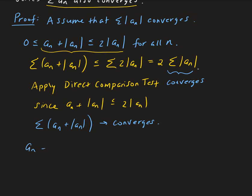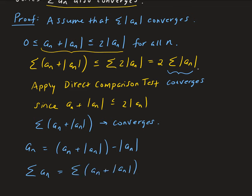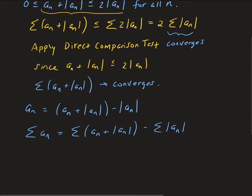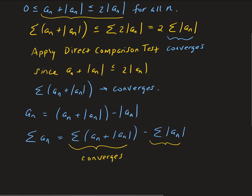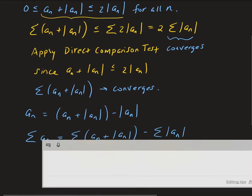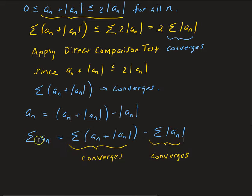We can rewrite the nth term as the nth term plus the absolute value of the nth term, minus the absolute value of the nth term. Then taking the summation on both sides, we can do this using the properties of summation — it's just the distributive property. We show that this converges using the direct comparison test, and this converges by our assumption. Since both parts are converging, therefore this series is converging.